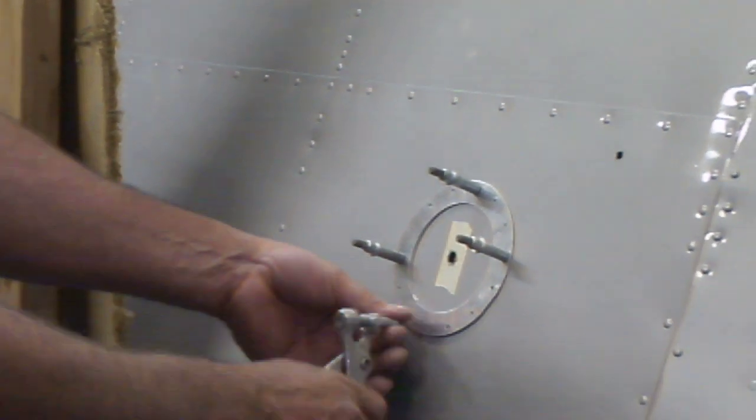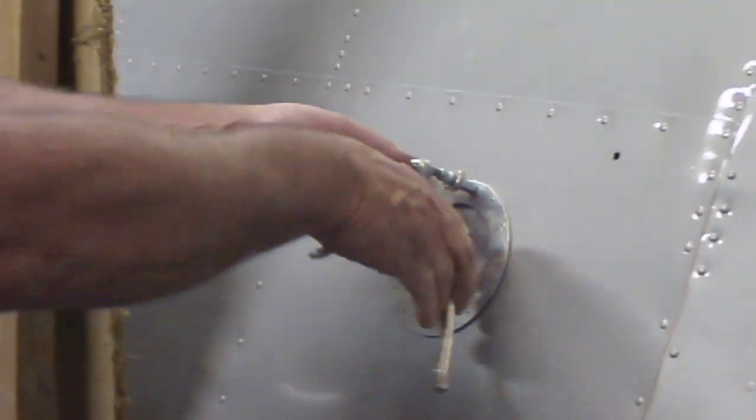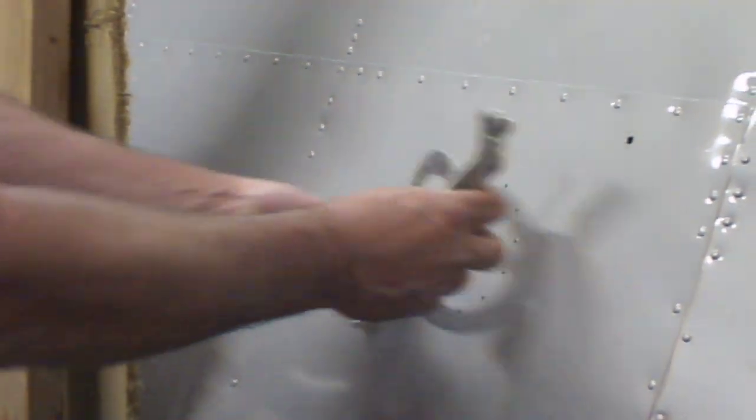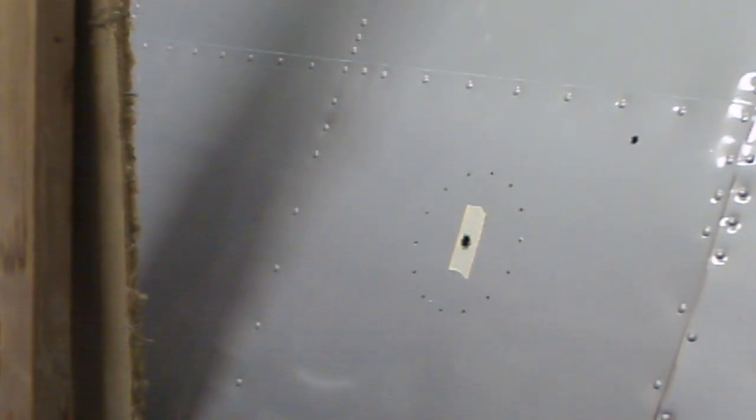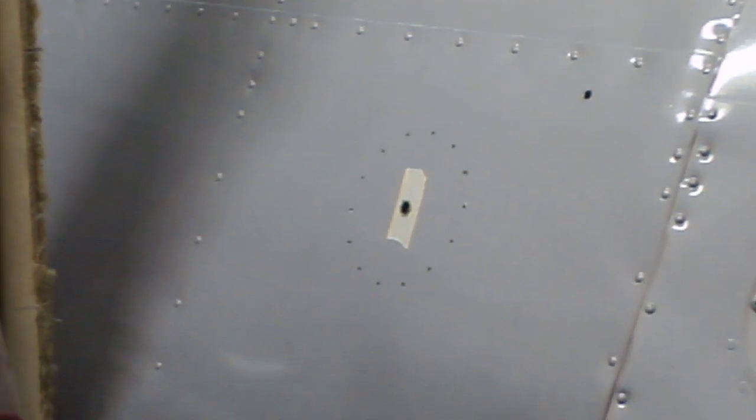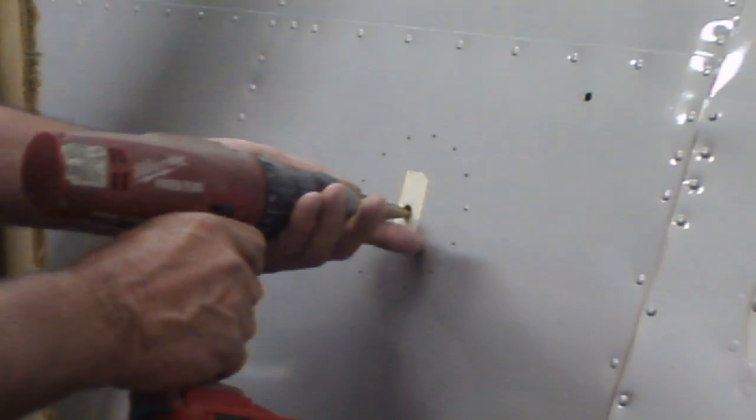Now we're removing the inspection plate. Those holes are already set, and then we're going to increase the size of the center for a router to go in.